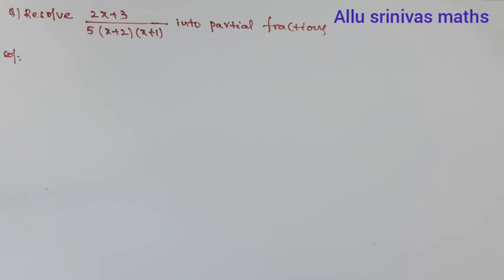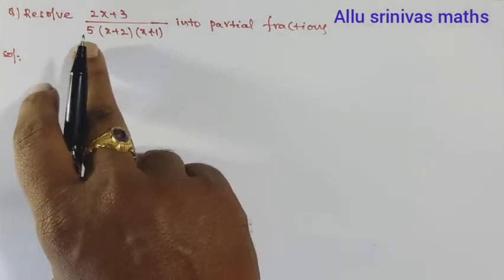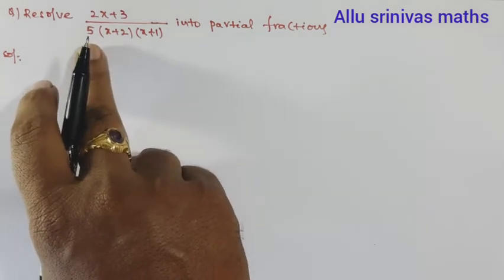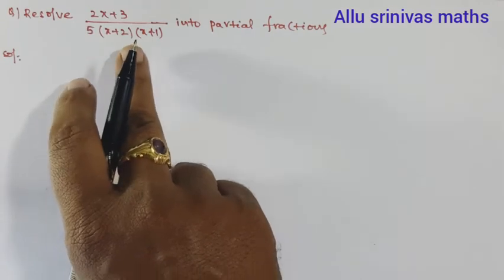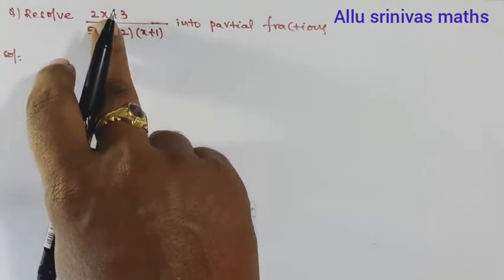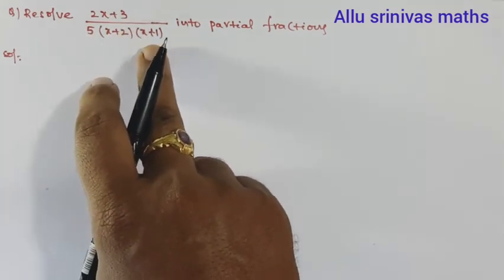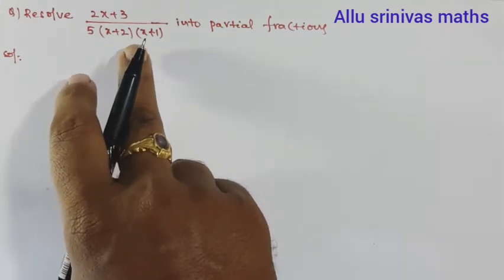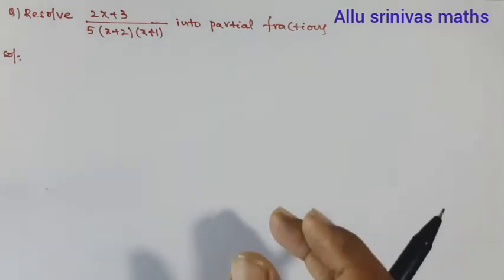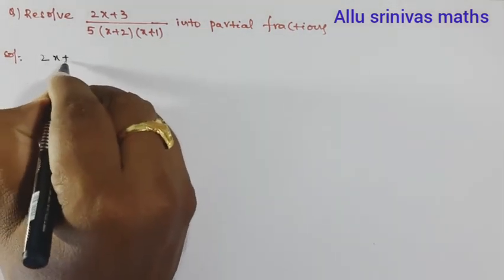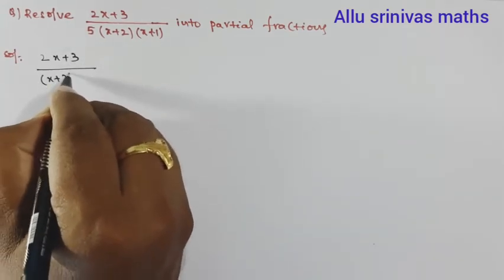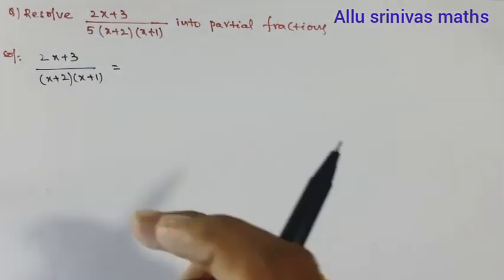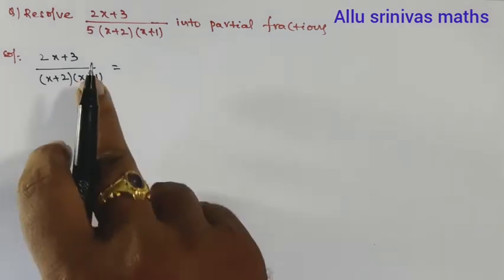Now we take another problem using this method. Generally in this problem everyone will get confused. The denominator contains three factors, but 5 is not a linear factor — leave it. That means it is better to first find the partial fraction of (2x + 3) / [(x + 2)(x + 1)], and after that multiply the result by 1/5. So first let us consider (2x + 3) / [(x + 2)(x + 1)], since 5 is not a linear factor, we just leave it and finally multiply by 1/5.